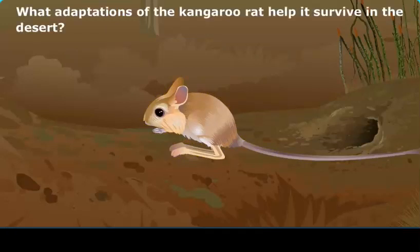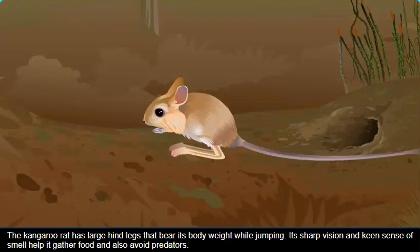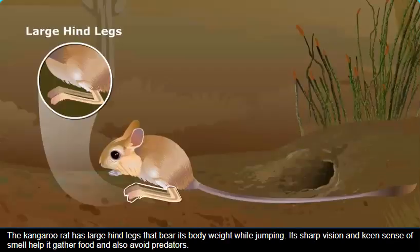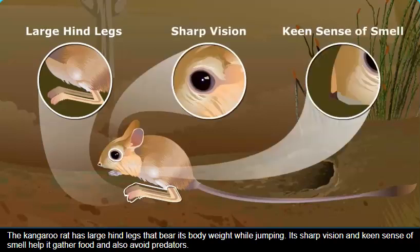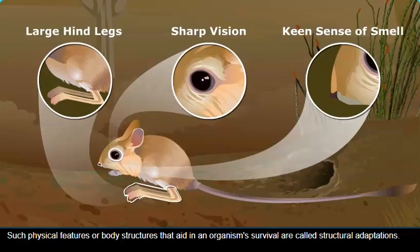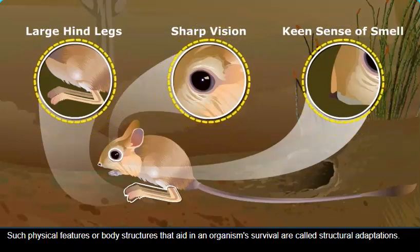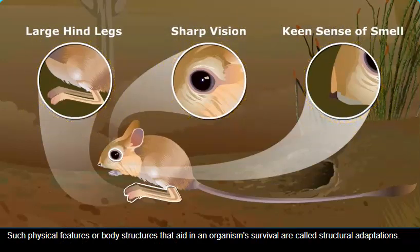What adaptations of the kangaroo rat help it survive in the desert? The kangaroo rat has large hind legs that bear its body weight while jumping. Its sharp vision and keen sense of smell help it gather food and also avoid predators. Such physical features or body structures that aid in an organism's survival are called structural adaptations.